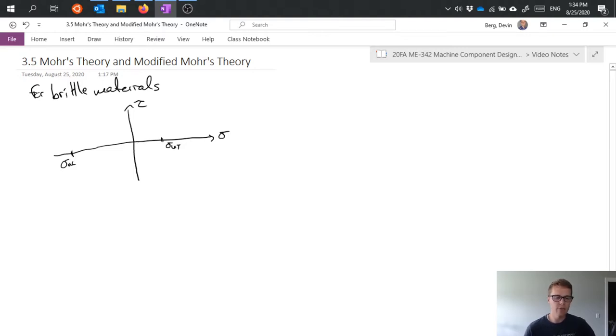And if we draw the Mohr's circle for these we'd have something like this and something like this. And then we would say that we're safe as long as our stress falls within this envelope which encompasses both of those plots. So as long as we're under those ultimate tensile or compressive strengths that we'd be okay and kind of in between there is covered as well.